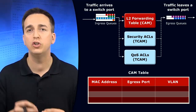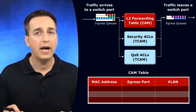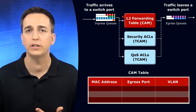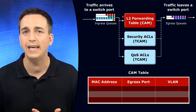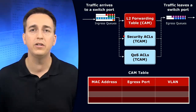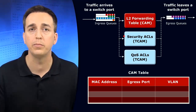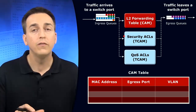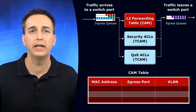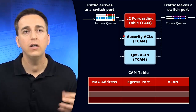The CAM table will be referenced to determine what the egress port is going to be. But there might be security mechanisms in place, and there might be quality of service markings or classifications that need to be done. That's where TCAM tables come into play for really fast, efficient lookups for security purposes and quality of service. For example, we might have some MAC address access control lists put in place to permit or deny certain frames entry on a particular interface.